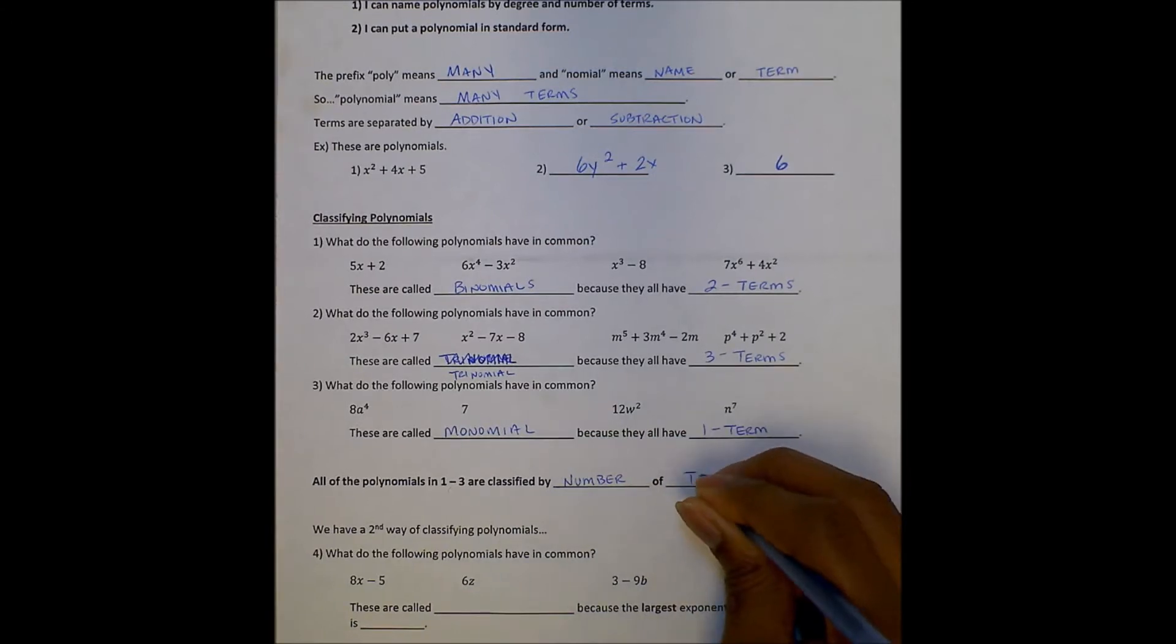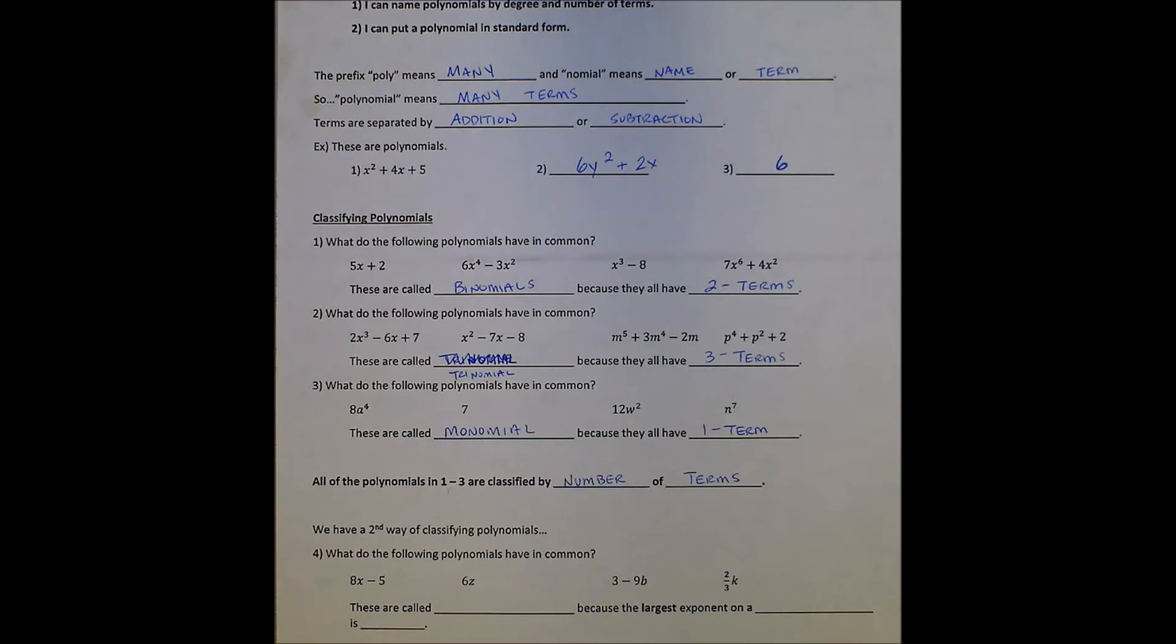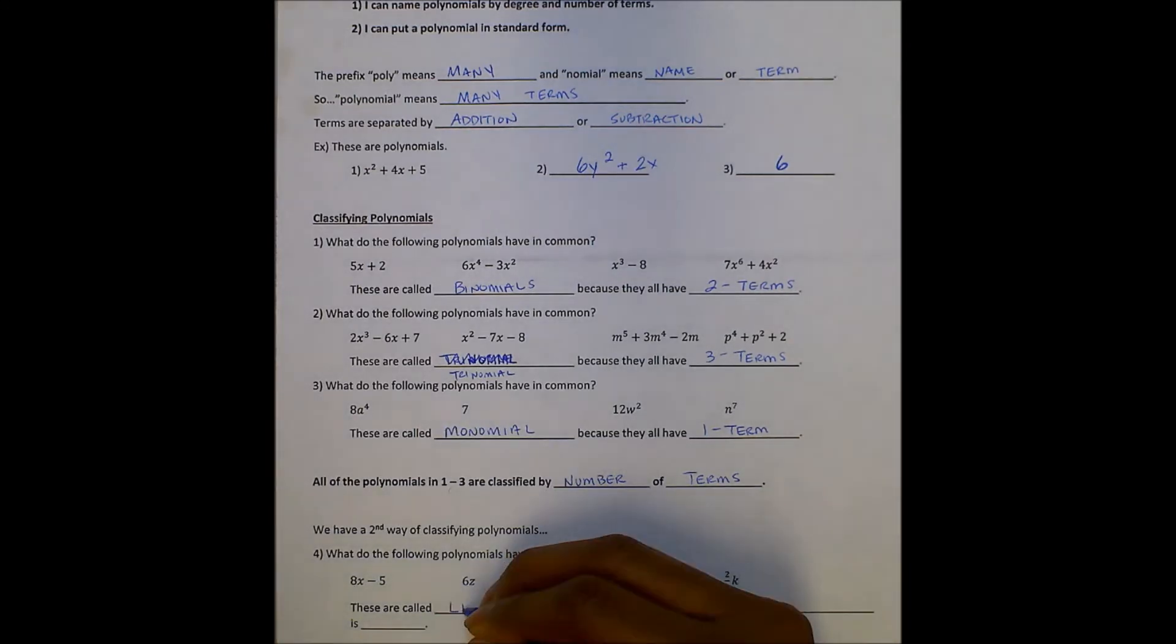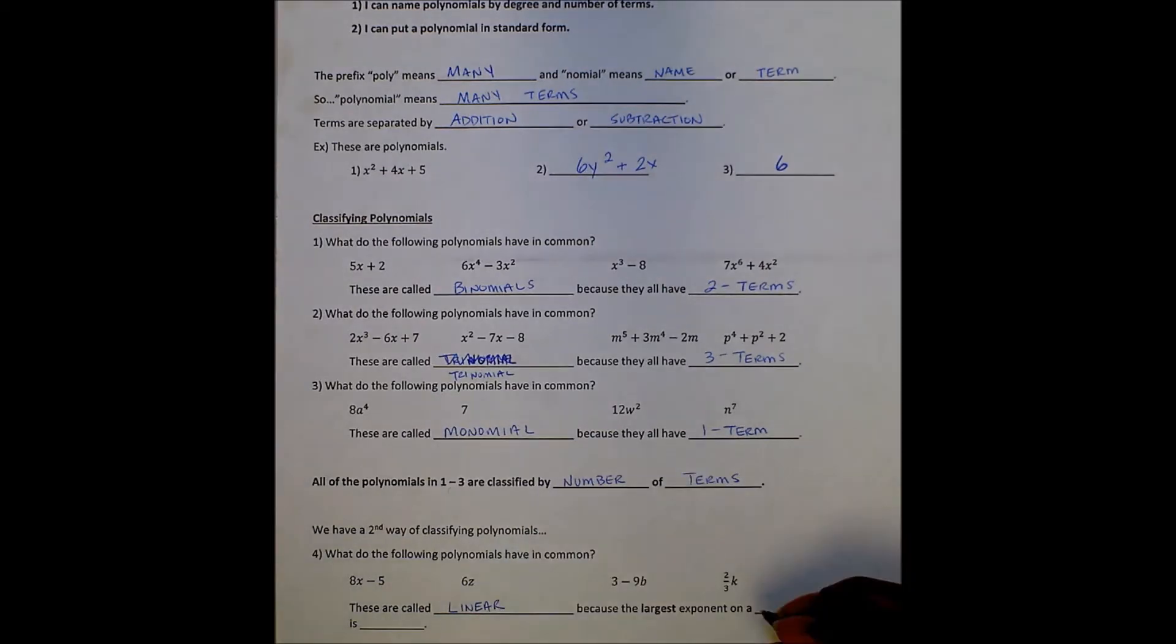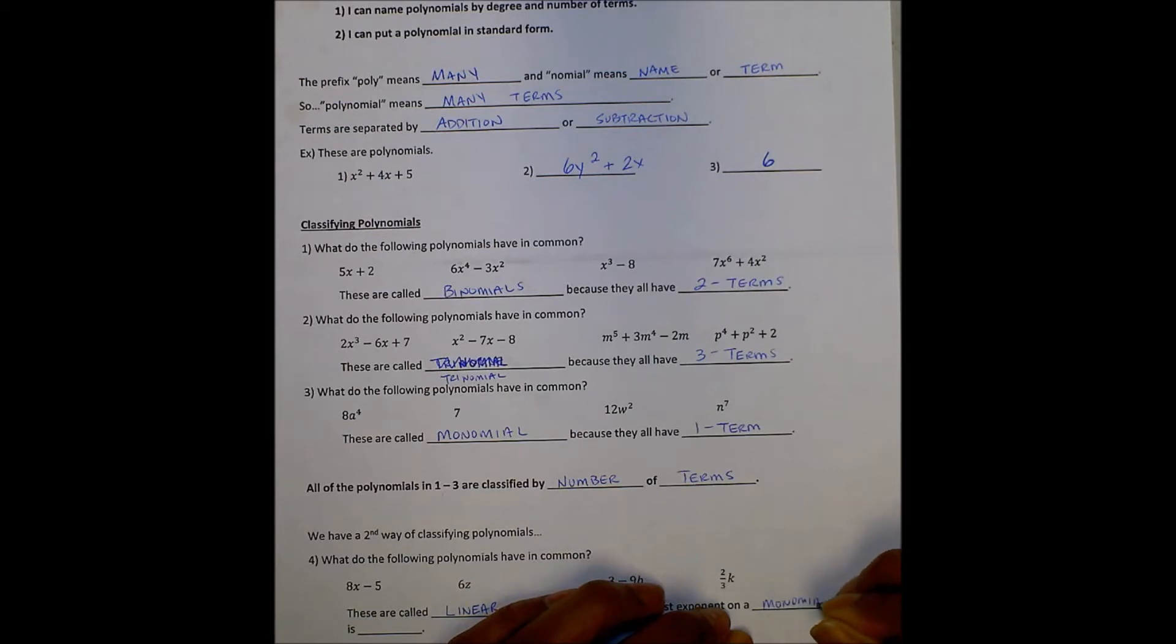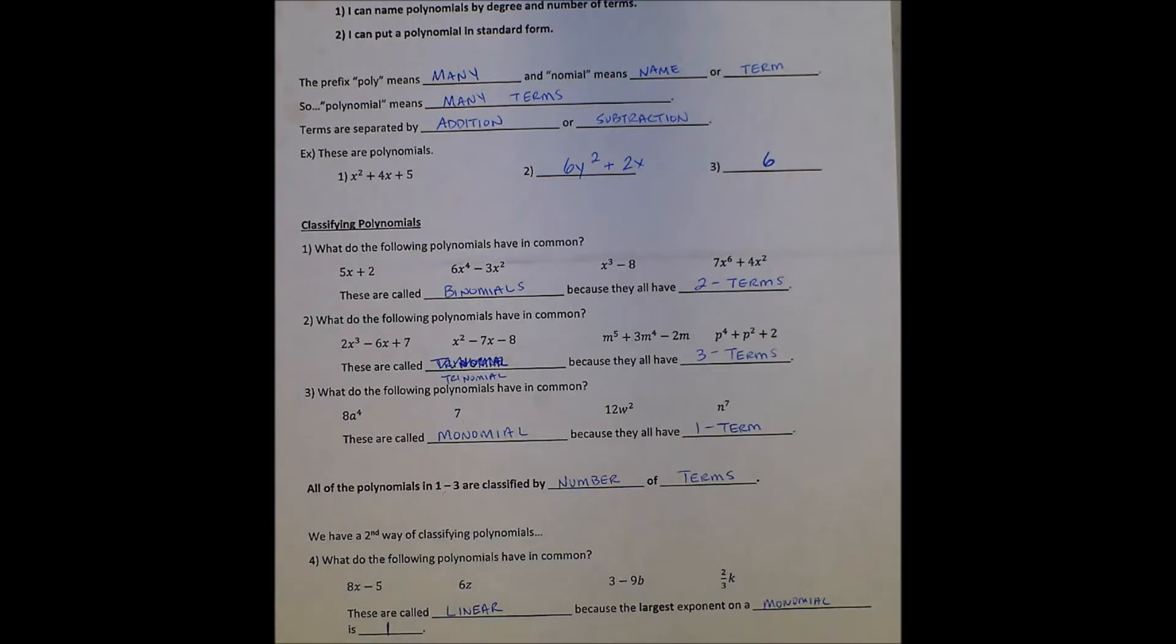All the polynomials in one through three are classified by the number of terms. That's one way. We actually classify polynomials based off of two things: the number of terms and the degree of terms. So here's the second way.